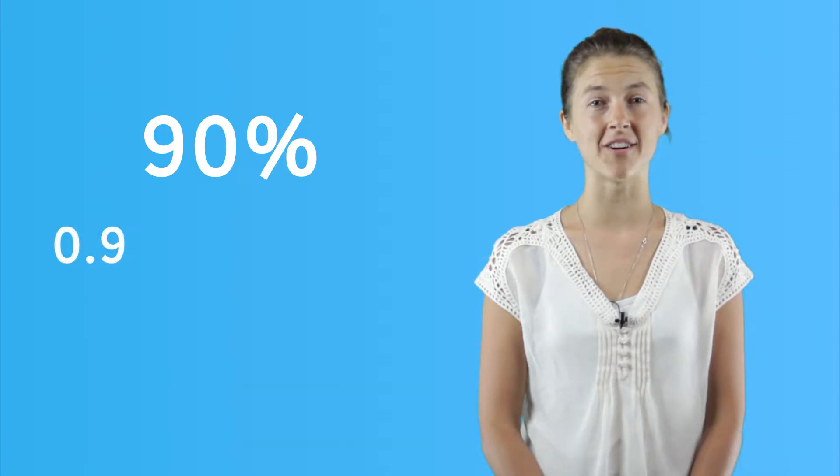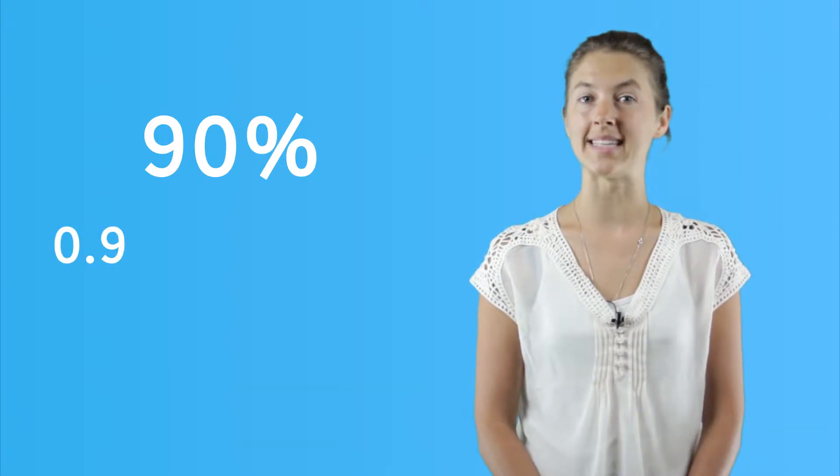A quick trick is to move the decimal point two places to the right to change the decimal to a percent. Be careful though, sometimes you won't see the final zero in the hundredths place, but it's still there.